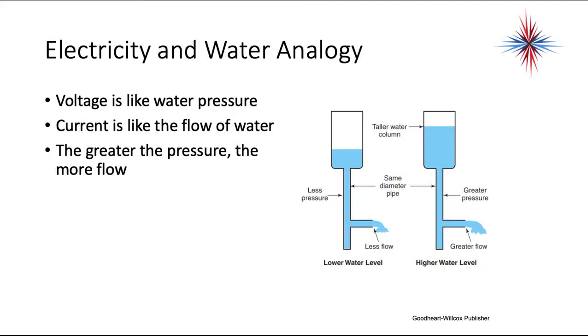If we look at a simple analogy of electricity and water, voltage is like water pressure, current is like the flow of water. The greater the pressure, the more flow, as long as everything else is the same. And if you look over here on the right, you'll see the diagram. The one on the left, you have less pressure because there's a less amount of water in the bucket at the top. Same pipe pressure, same pipe diameters, but you have less flow than the amount you would get with the taller water column, which is the higher water level. More pressure.